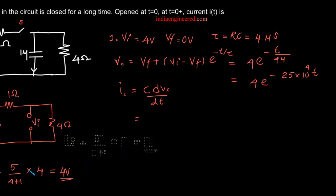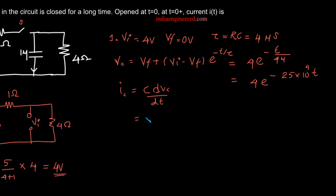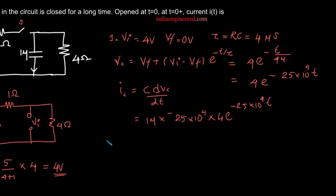The current through the capacitor is C times the derivative of Vz. That is 1 microfarad times the derivative of 4·e to the power minus 25×10⁴·t. We are asked to find the value of I_C as t tends to 0 plus. Substituting t equal to 0, we get 1 micro times 10 to the 4. That means 10 to the power minus 2. With 25 times 4 giving 100, both factors cancel and we get minus 1 amp.